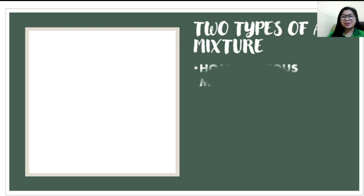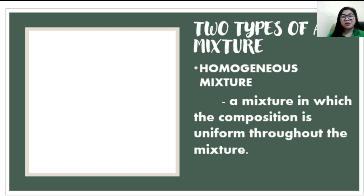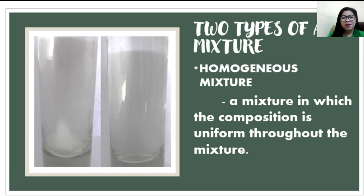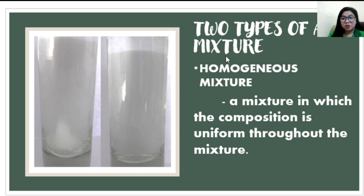Now let's proceed to the two types of mixture. First, we have homogeneous mixture. A homogeneous mixture is a mixture in which the composition is uniform throughout the mixture. Looking at this illustration, we have a glass of water with salt and a glass of water with dissolved salt. As we can see, the salt cannot be visible anymore because it is evenly distributed in the mixture. So, it is under homogeneous mixture.